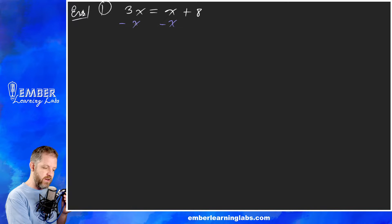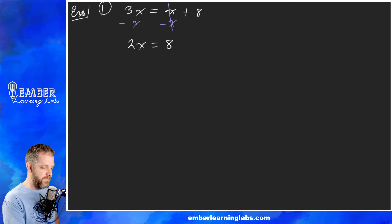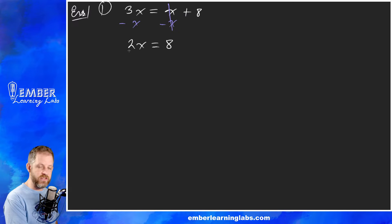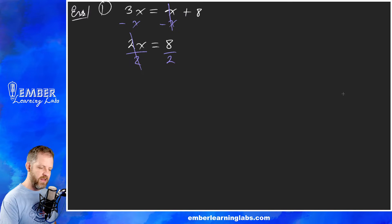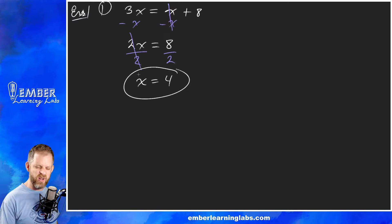Those x's cancel. 3x minus x is 2x, and we bring down what we haven't touched. Now we've got a simple one-step equation. The 2 is multiplied onto x, so we divide by 2 on both sides. Those 2's cancel, leaving us with x equals 4. Not so bad! Let's do one more that's a little bit more complicated.